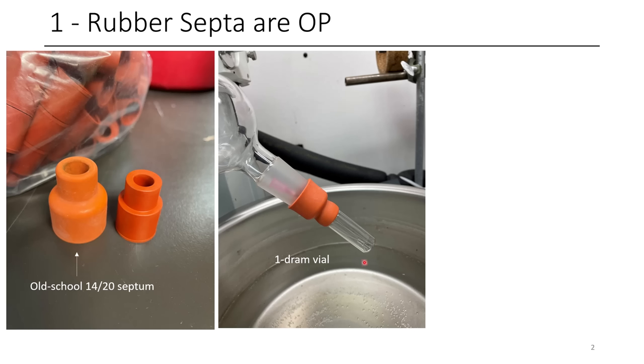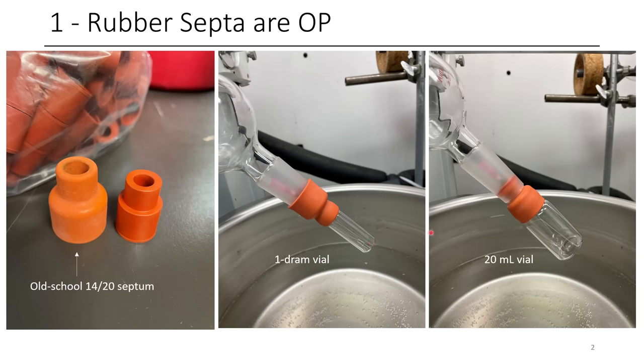And so while this is pretty good for rotovapping stuff down right into the vial that you're going to keep your compound in, you can also do it into a 20 mL vial if you have more sample. This is a really useful trick. It's very useful because afterwards you can just connect this onto a vacuum line and high vac it off.